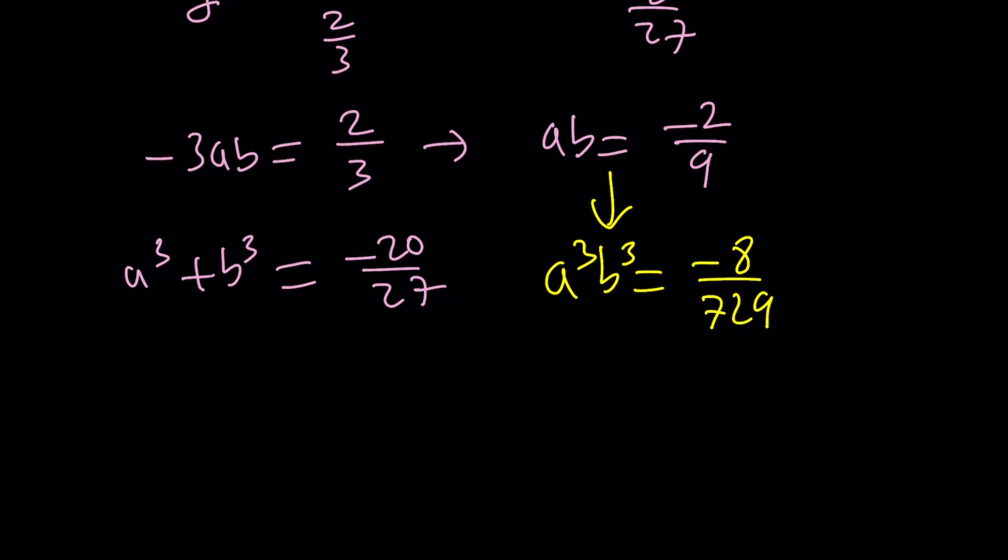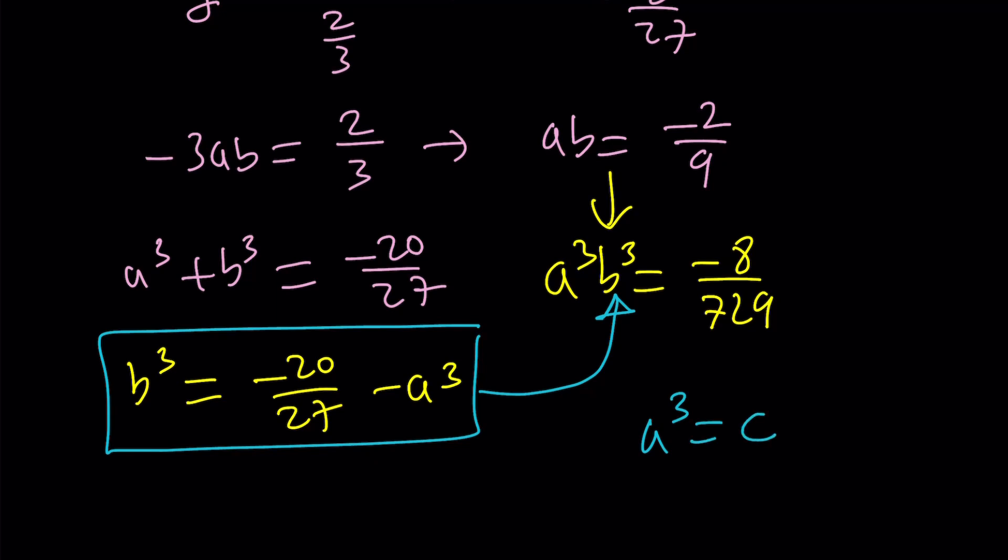Replace b cubed with negative 20 over 27 minus a cubed and then if you plug that in here you're going to get a to the third and a to the sixth and then you can go ahead and set a cubed equal to c and you'll get a quadratic in c.